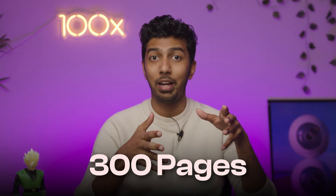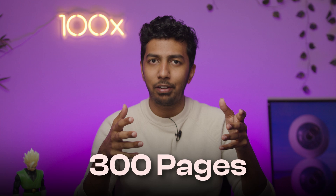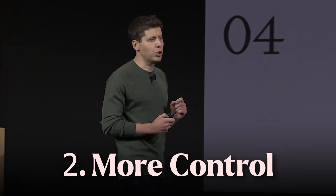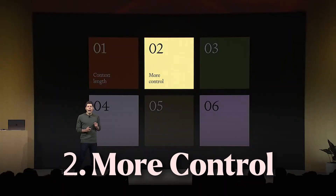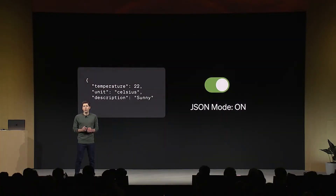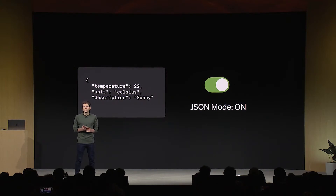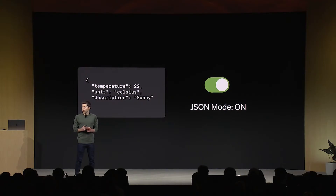Number two is more control, which is something more relevant to developers. GPT-4 Turbo has a mode called JSON mode which, when turned on, can actually return a valid JSON file. And it doesn't just end there — it can actually return multiple JSON files in the same query as well. This new JSON mode ensures that the model will respond with valid JSON, making calling APIs much easier.